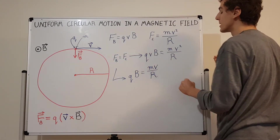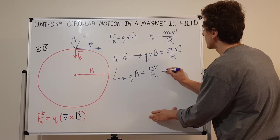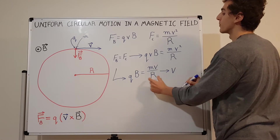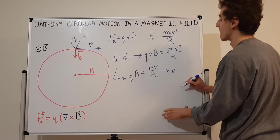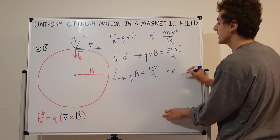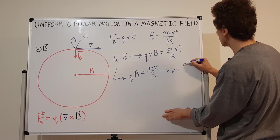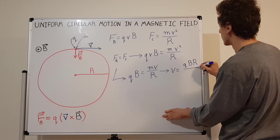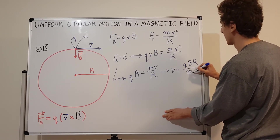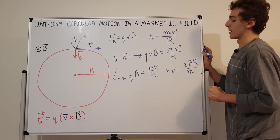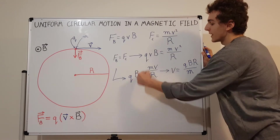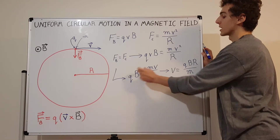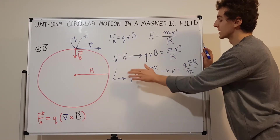Another manipulation: take that V to the left-hand side, multiply by r and divide by m. So we get V equals Q B r over m. Q B is always together, m is always in the denominator, and r comes to the numerator when we do this manipulation.